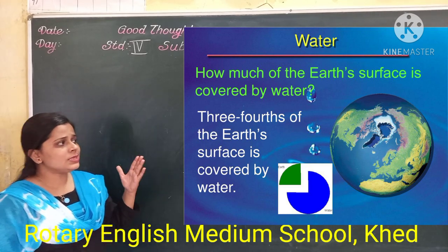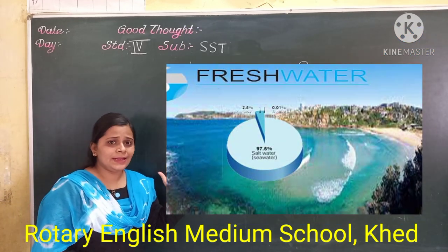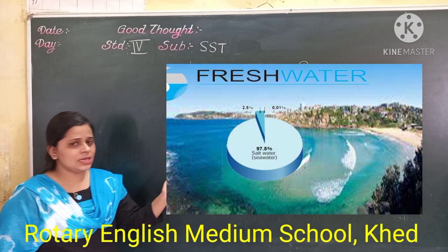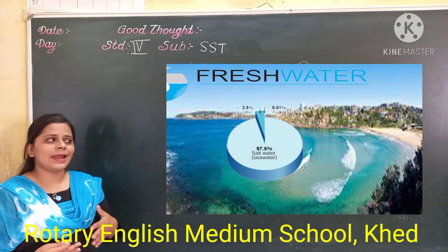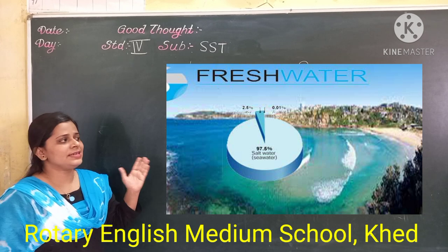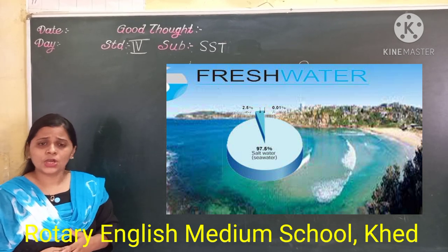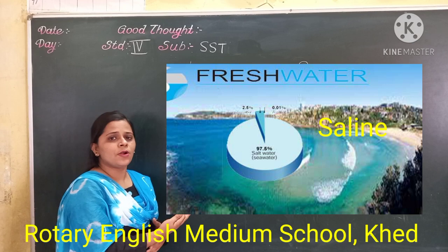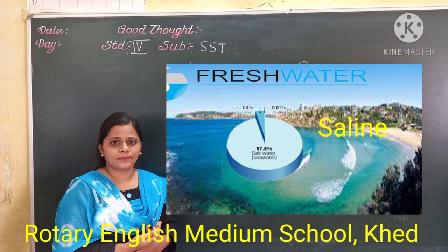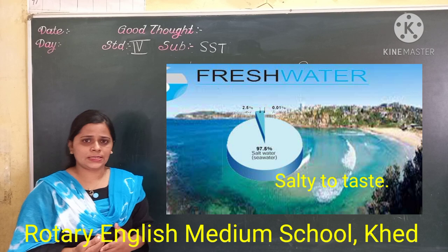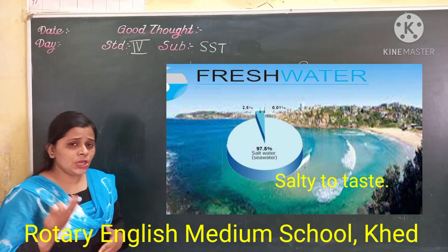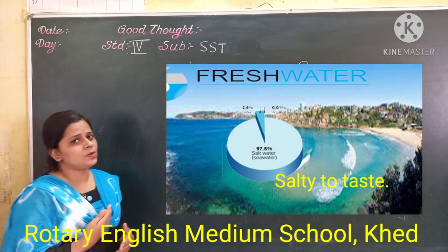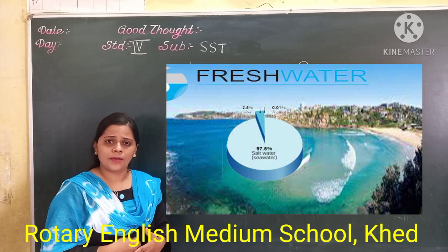Why is this water not useful? Because the water which is available on the earth is in the seas and oceans. 97% of this water is in seas and oceans. You know the water in the seas and oceans is salty to taste. So, can we use salty water? No. We cannot use salty water for our domestic purpose and also for industrial purpose.